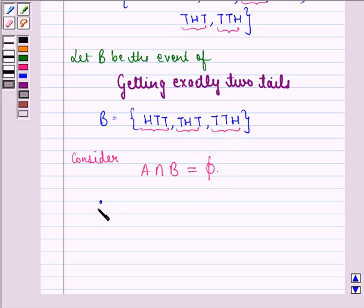Therefore, A intersection B is not equal to phi. So they are not mutually exclusive.